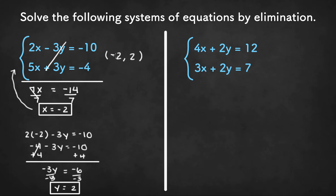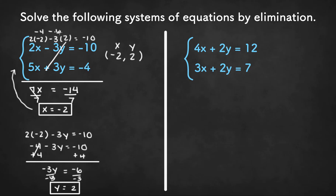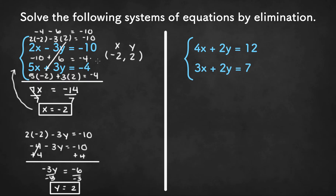To make sure this is the right solution, we can plug in these values for x and y into both equations. In the first equation, 2 times negative 2 minus 3 times 2 should equal negative 10. 2 times negative 2 is negative 4, and negative 3 times 2 is negative 6, and negative 4 minus 6 is indeed negative 10. In the second equation, 5 times negative 2 plus 3 times 2 equals negative 4. 5 times negative 2 is negative 10, plus 3 times 2 is plus 6. Negative 10 plus 6 is negative 4, so we know we got the right solution.